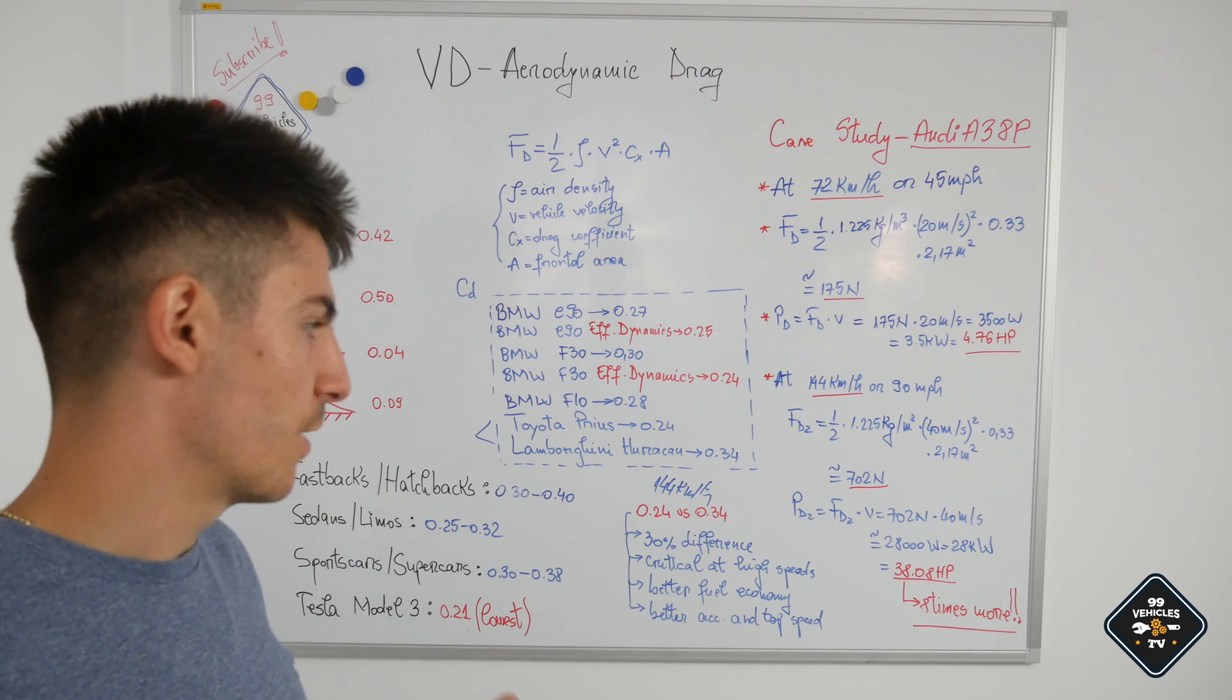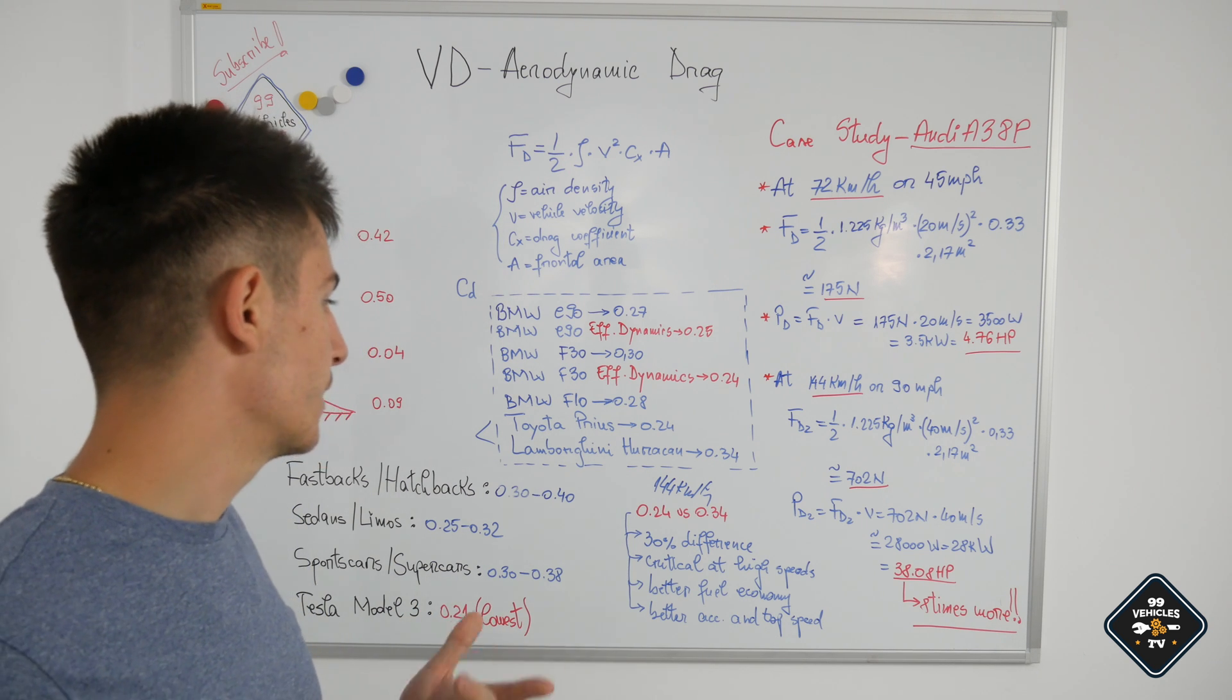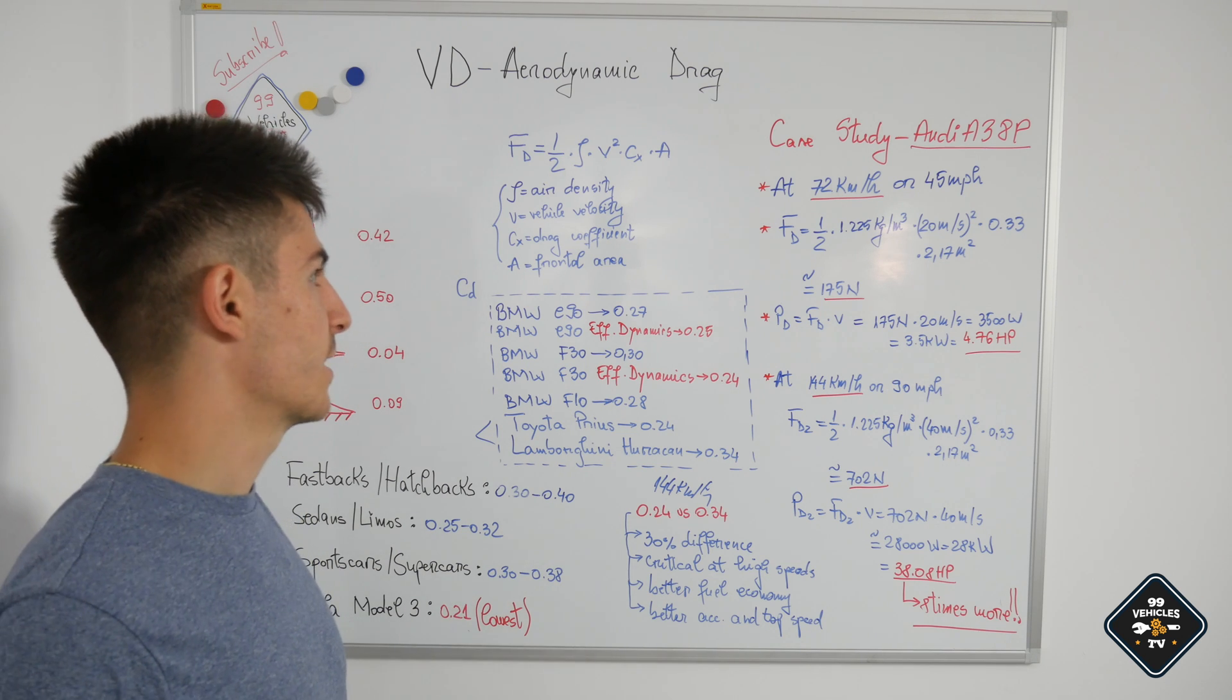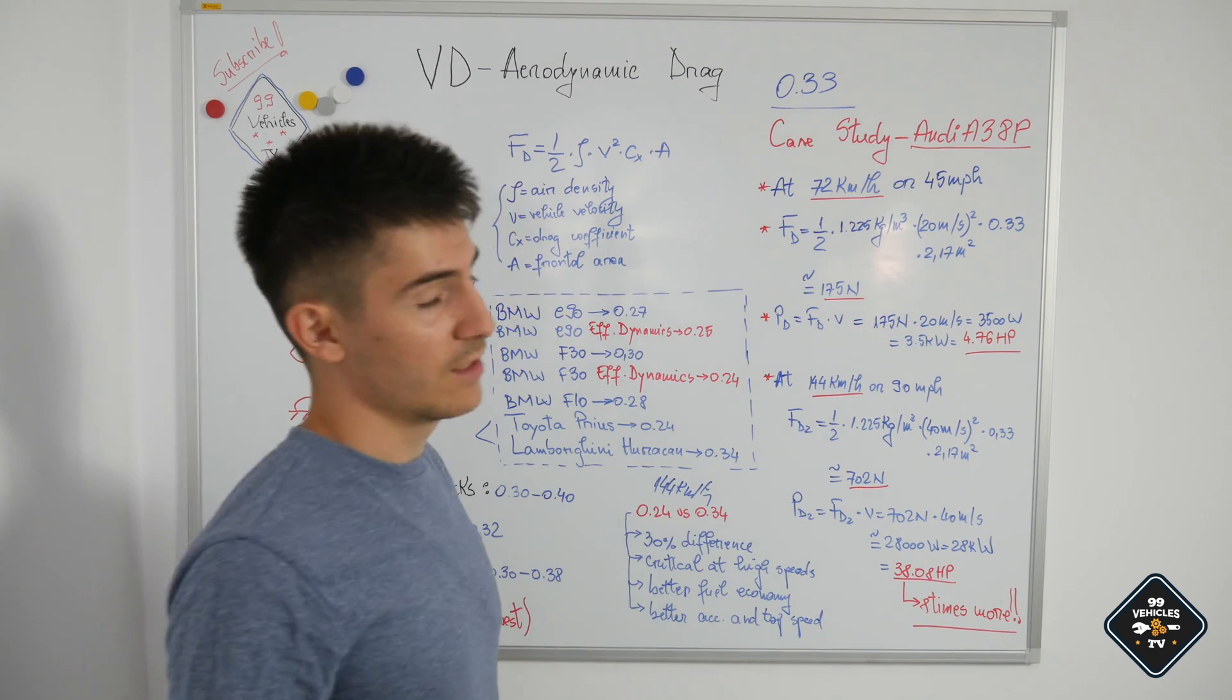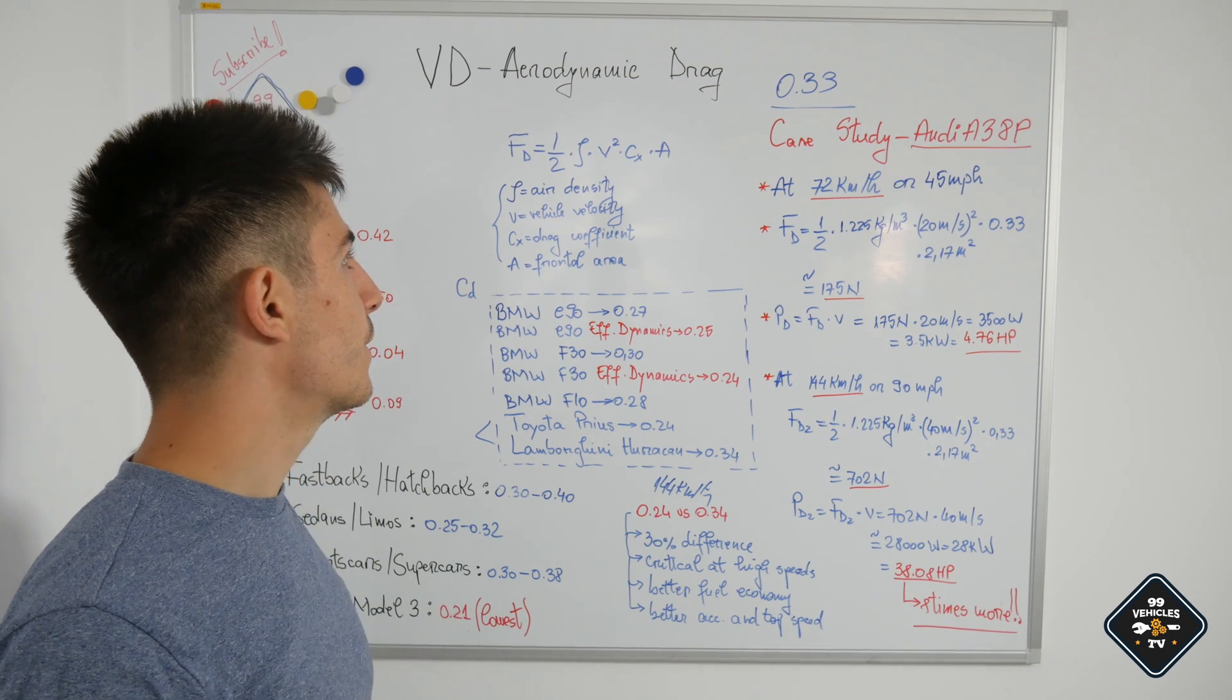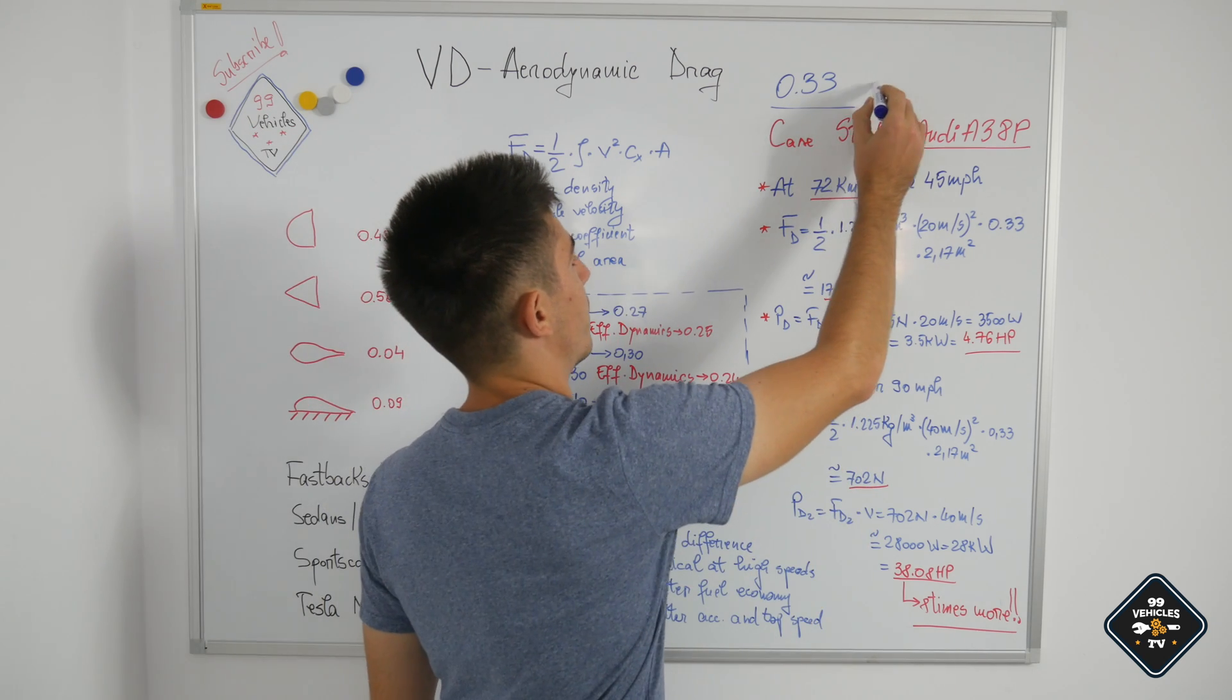Pay attention when you purchase the car. Ask the dealer what drag coefficient does this car have. If you purchase a car like mine, a hatchback, it has an awful drag coefficient, 0.33, which kind of sucks in my opinion. If you buy a brand new car in 2017, 2018, make sure that you have a drag coefficient of at least 0.28.